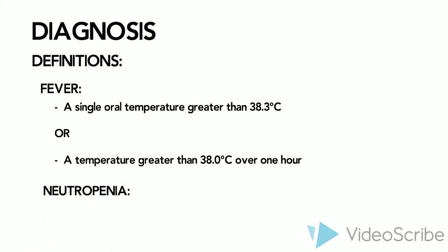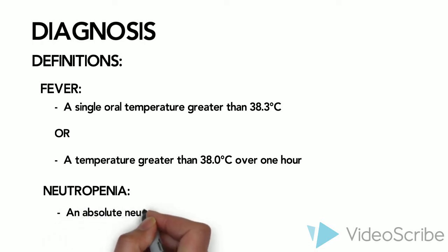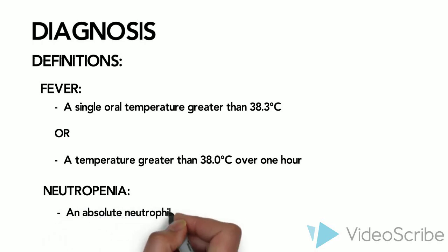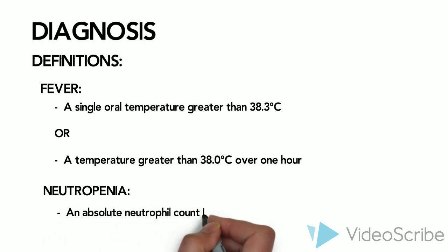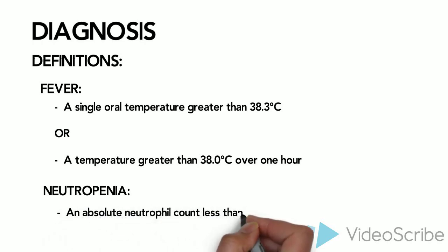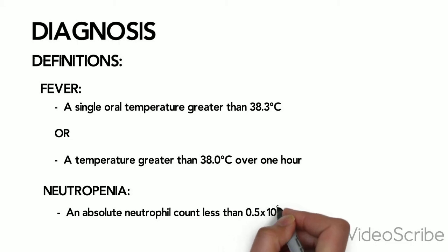The definition of neutropenia is an absolute neutrophil count less than 0.5 times 10 to the 9th cells per liter.